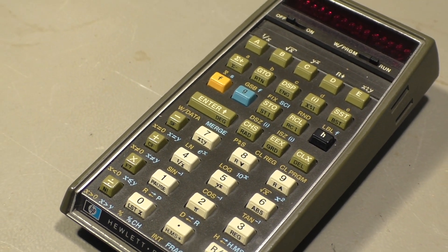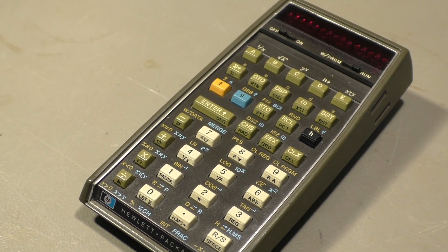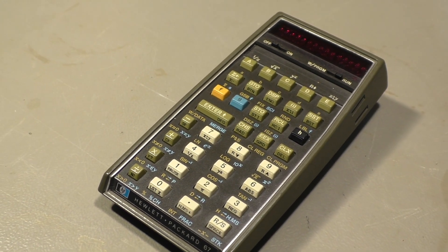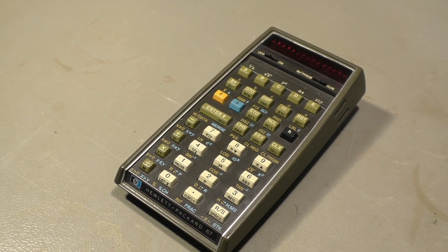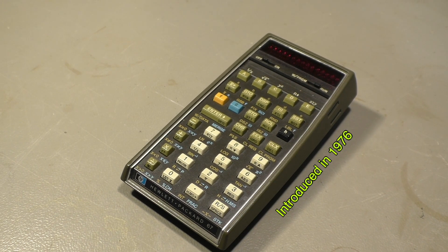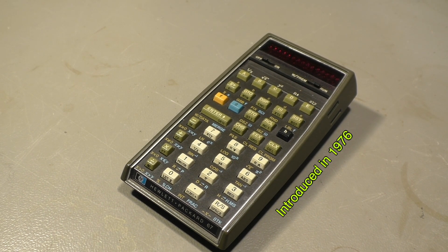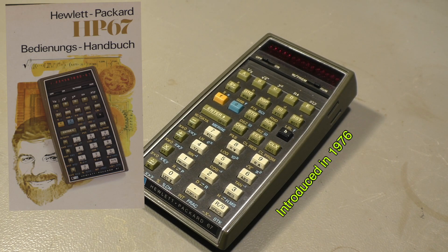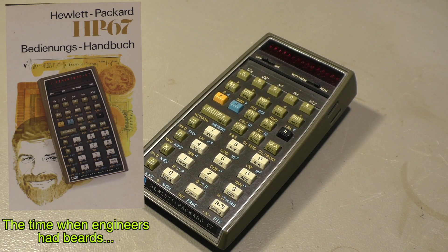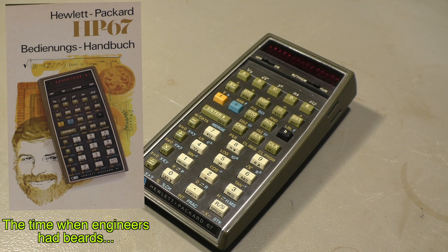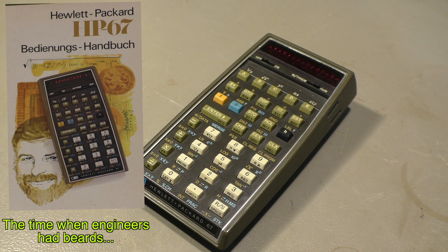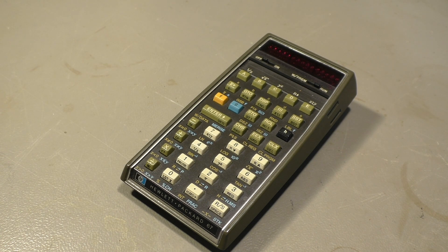It's an HP 67 and as most calculators from that time, this one was equipped with nickel-cadmium rechargeable batteries. That makes sense because the LED screen used a lot of power and you had to recharge them frequently or simply let it run from the power supply.